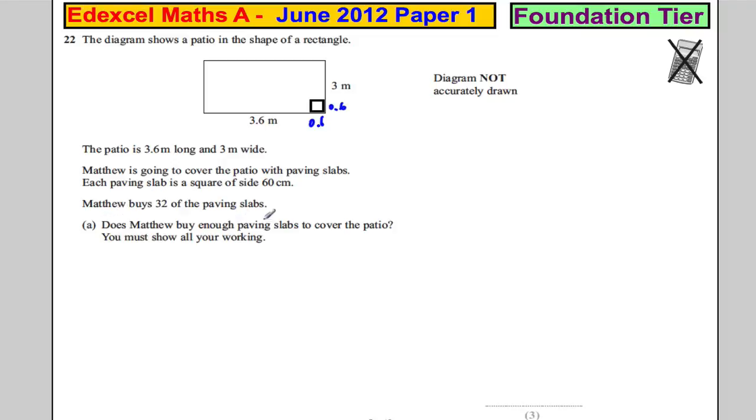Matthew buys 32 of the paving slabs. Does Matthew buy enough to cover the patio? You must show all your working.